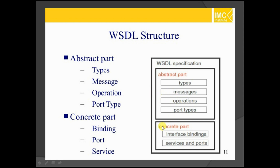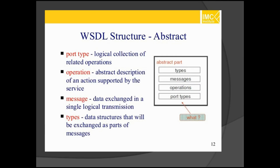The concrete part contains interface binding, and services and ports. The abstract part refers to whatever message you are sending and to whom — that information is in the header. The concrete part refers to accessing different sources. The abstract part's first element is port type — a logical collection of related operations, with different port types. Then operations are an abstract description of an action supported by the service.